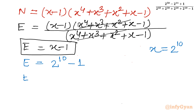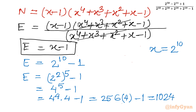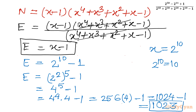We can also express this in terms of base 4: 2 power 10 equals (2 squared) power 5 equals 4 power 5 equals 4 power 4 times 4, which is 1024. So our answer is 1024 minus 1, which is 1023. Putting the value of 2 power 10 directly as 1024, we confirm 1024 minus 1 equals 1023. This is our final and ultimate answer.